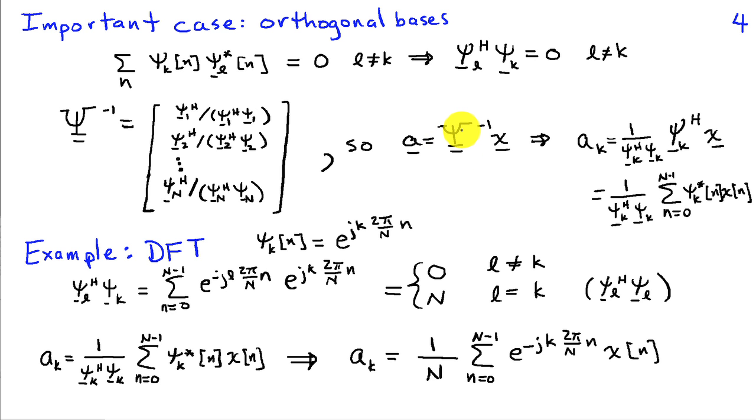So the beauty of orthogonal basis is that they greatly simplify this process of finding the basis coefficients because we have a known form for the inverse of the basis matrix. So basis function expansions are extremely powerful and widely used in signal processing, and they fit into a fairly simple general formula. And then as you look at special cases of particular basis choices, you can see why some bases are advantageous over others.